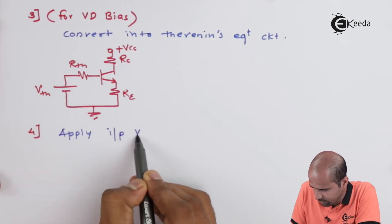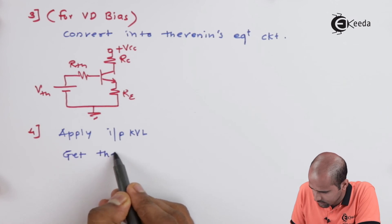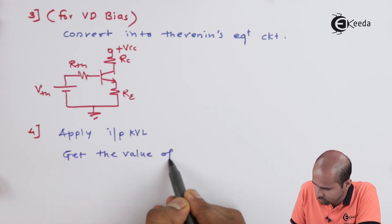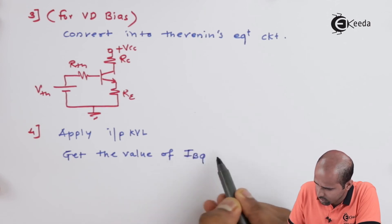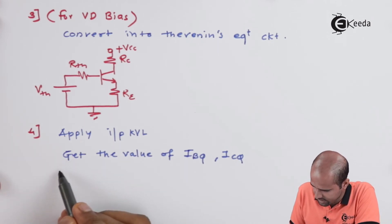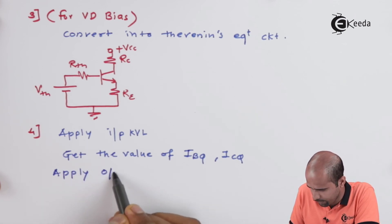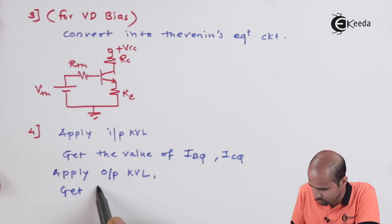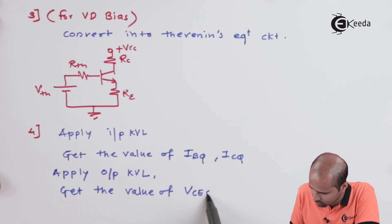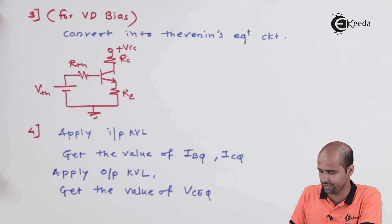Applying input KVL allows us to get the values of IBQ and ICQ. In the same step, we get VCEQ by applying output KVL. After obtaining ICQ and VCEQ, we have the reference point — the Q point — which is the fundamental step for any amplifier analysis.